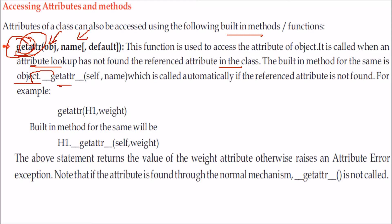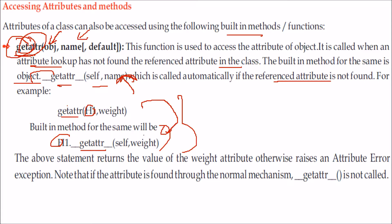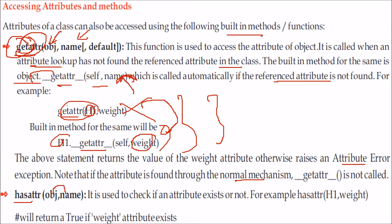The syntax is: object.__getattr__(self, name). This is called automatically if the referenced attribute is not found. For example, `getattr(h1, 'weight')` — the built-in equivalent is `h1.__getattr__(self, 'weight')`. This statement returns the value of the weight attribute, or raises an AttributeError exception. Note that if the attribute is found through the normal mechanism, `__getattr__` will not be called.